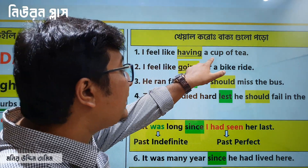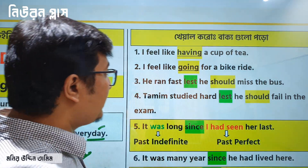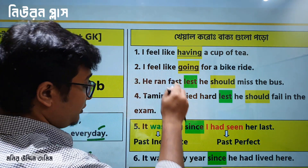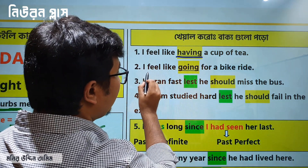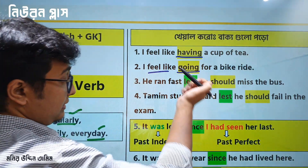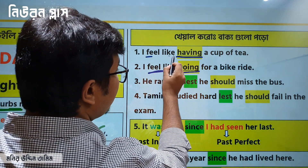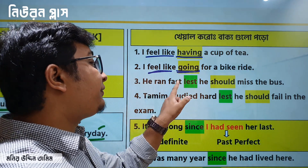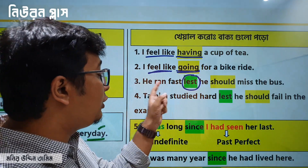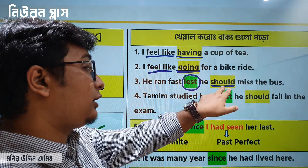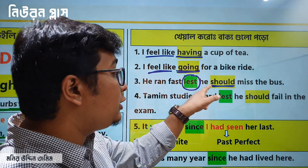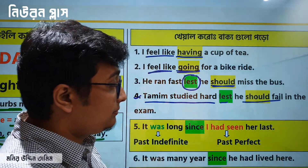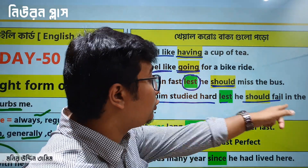I feel like having a cup of tea. I feel like — and this is the answer. You can say: I feel like having a cup of tea. I feel like going for a bike ride. He studied hard and he said lest he should fail in the exam. He said he started hard and lest he should fail in the exam.